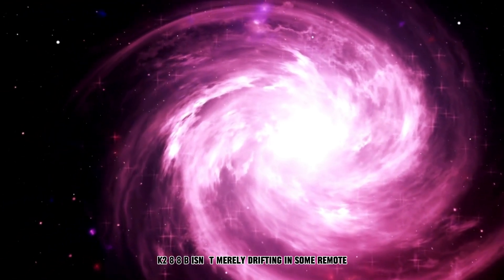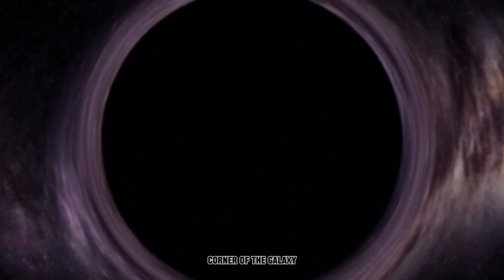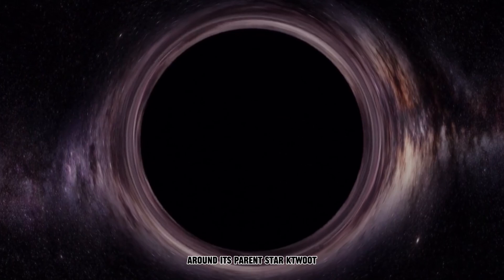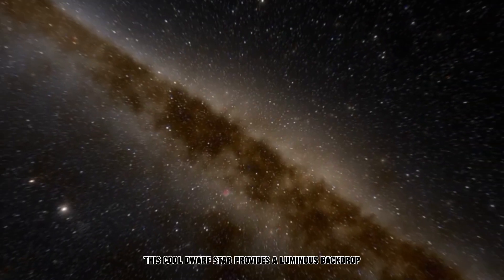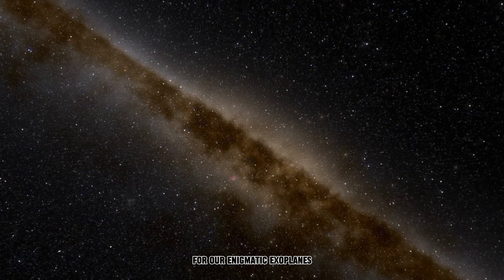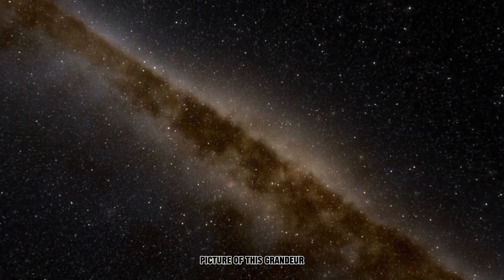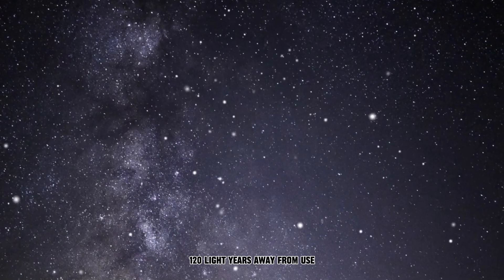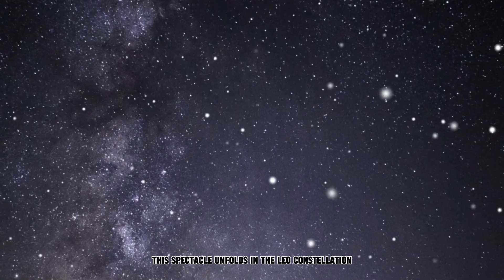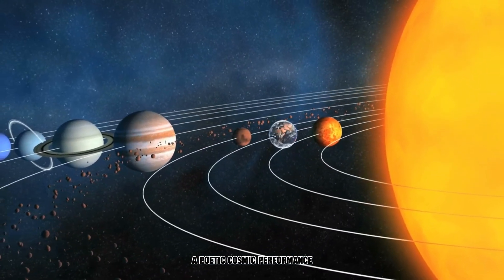K2-18b isn't merely drifting in some remote corner of the galaxy. It's intricately choreographed in a celestial dance around its parent star, K2-18. This cool dwarf star provides a luminous backdrop for our enigmatic exoplanet. Picture this grandeur: 120 light-years away from you, this spectacle unfolds in the Leo constellation, a poetic cosmic performance.